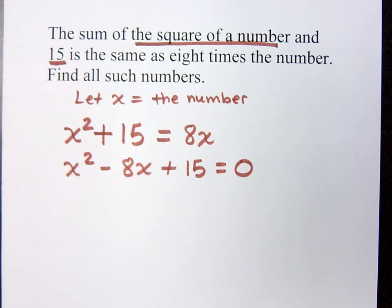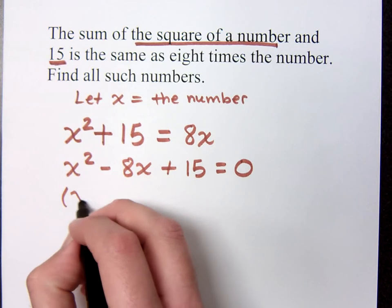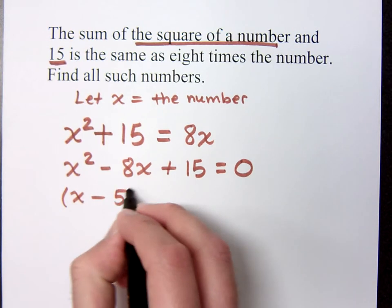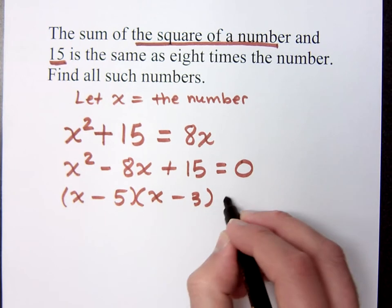Okay. So, how do you factor this guy? Five and three. Negative five. So, x minus five and x minus three. X minus three equals zero.